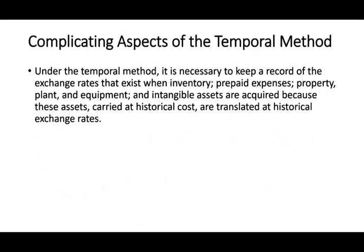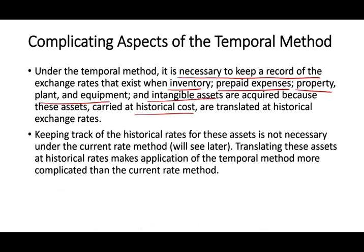What could complicate things under the temporal method? It is necessary to keep records of exchange rates that existed when inventory, prepaid, property, plant and equipment, and intangibles were acquired, because they are carried at historical cost. We have to make sure we know the historical cost when those assets were acquired. In contrast, under the current rate method, we don't have to worry about tracking historical costs — that makes the temporal method more complicated.